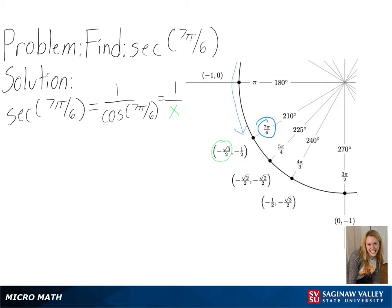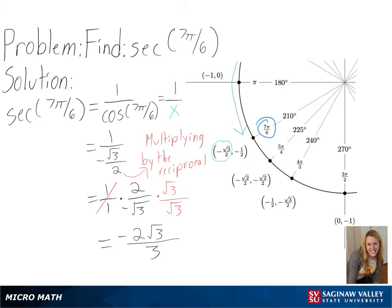So we will get 1 over the square root of negative 3 over 2. And after multiplying by the reciprocal and simplifying, we get negative 2 times the square root of 3 over 3 as our final answer.